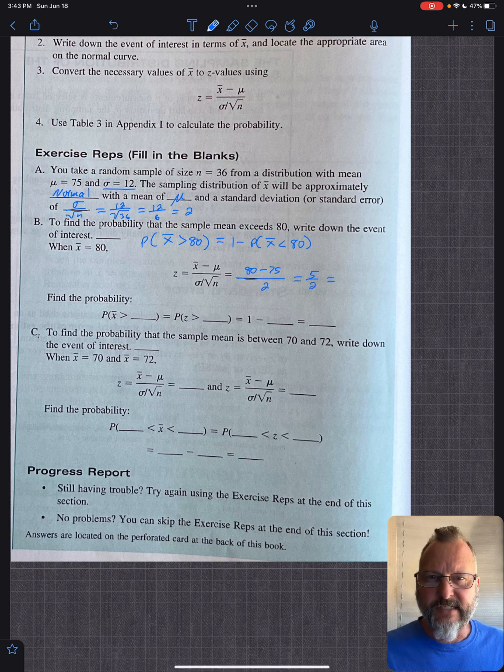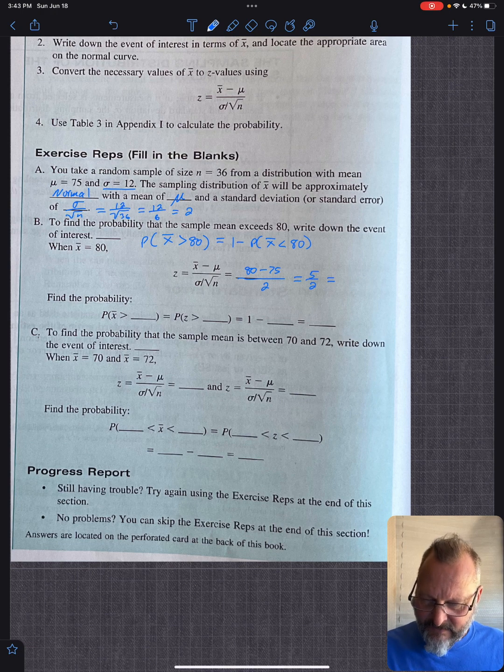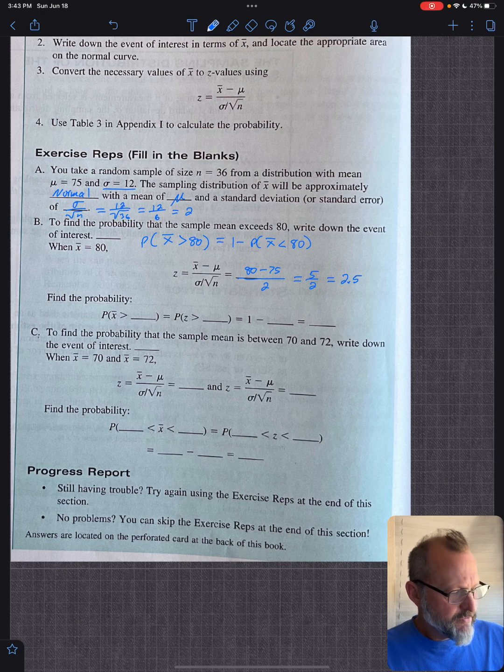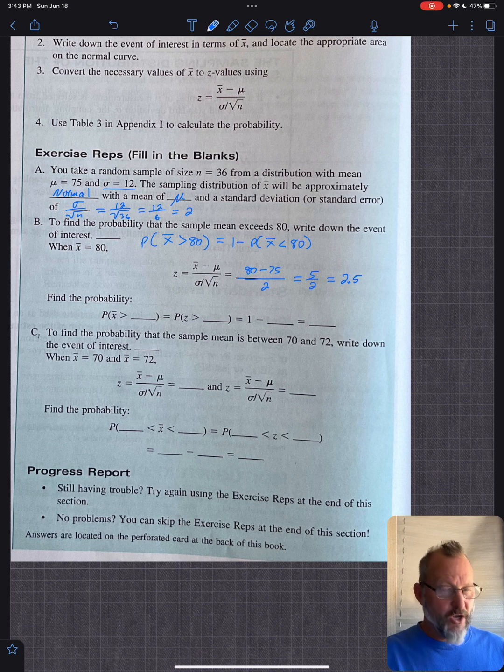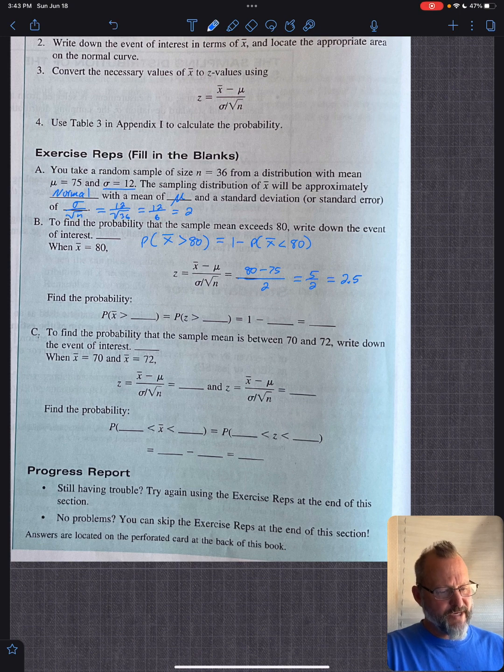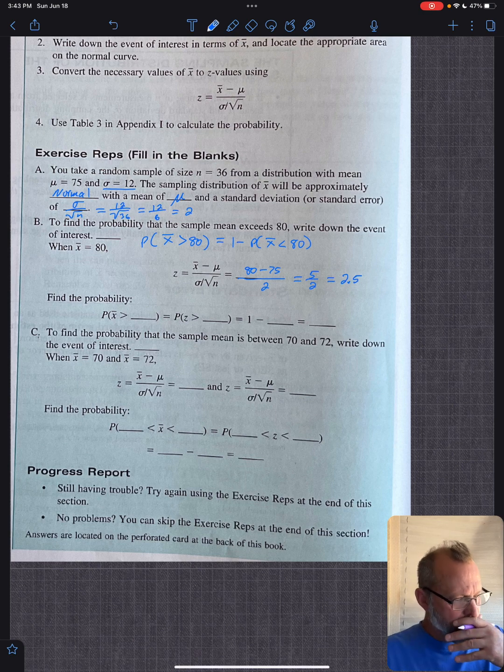So that is 5 halves, and decimals are fine in statistics, not in my algebra or calculus classes or above. So you get 2.5. So that's your Z. Now, think of it, your Z score is 2.5, that's 2.5 standard deviation, so the probability is going to be really, really low that it's above that. Right, the mean is 75. Well, the standard error is only 2, so that's pretty high.